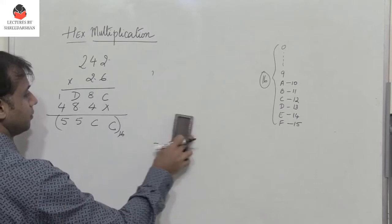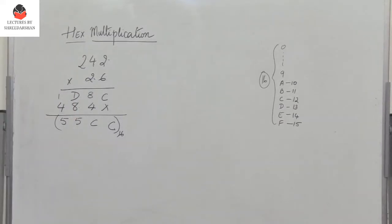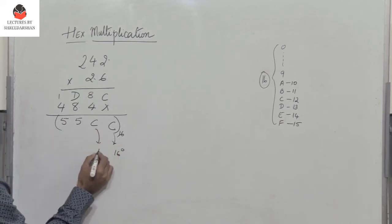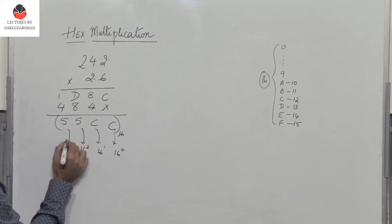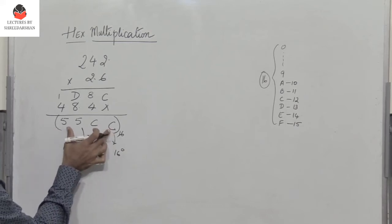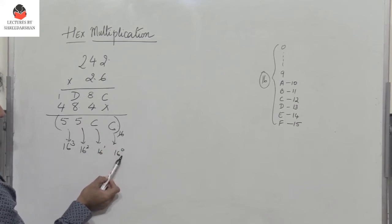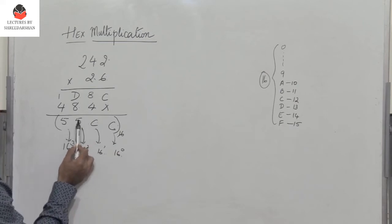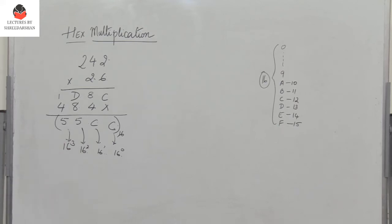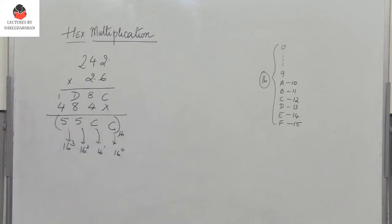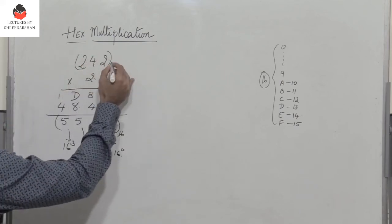So the final answer is 5, 5, C, C. The weight of this is 16 power 0, 16 power 1, 16 power 2, and 16 power 3. So if you have to convert this hex to a decimal number, you multiply C which is 12 into 16 power 0 plus 12 into 16 power 1 plus 5 into 16 power 2 plus 5 into 16 power 3. You will get the equivalent decimal representation of this multiplication of 2 hex numbers.